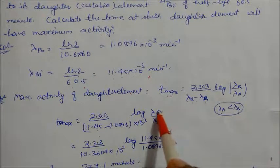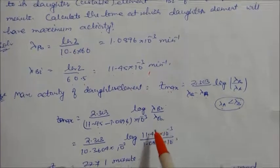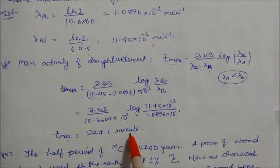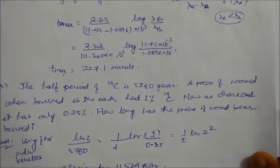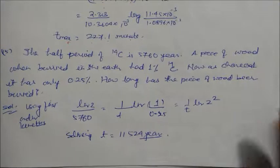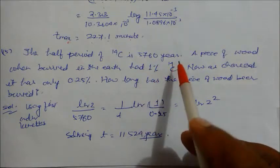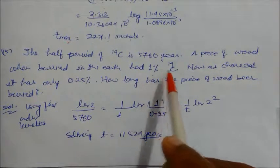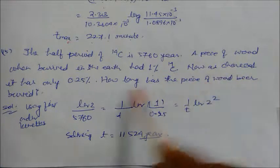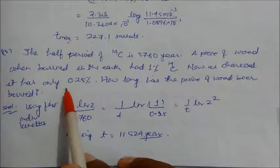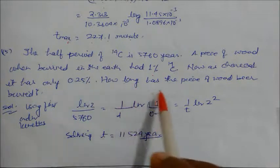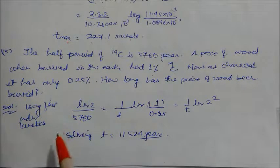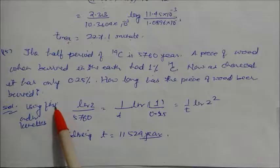Problem 15: Half-life of C-14 is 5760 years. A piece of wood when buried in the earth had 1% C-14. As charcoal it now contains 0.025% C-14. How long has it been buried? Using first order kinetics with initial = 1% and final = 0.025%, solving gives t = 11,500 years approximately.